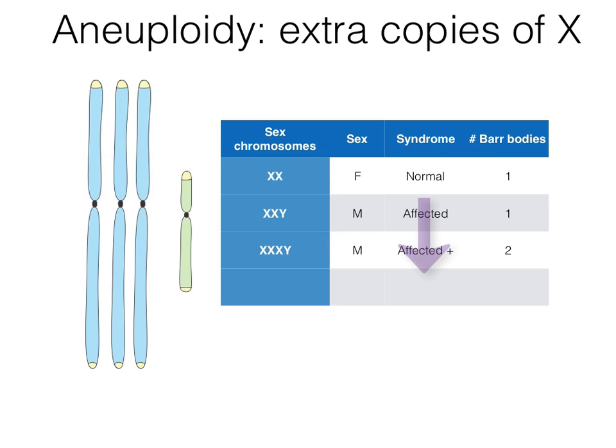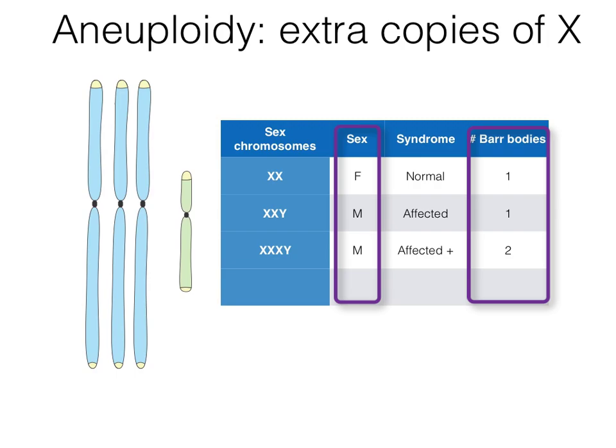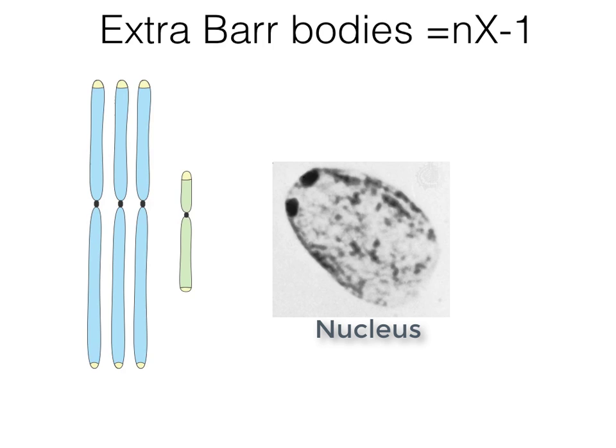Interestingly, the number of Barr bodies is always equal to the number of X's minus one. For example, the nucleus shown here is from an XXXY individual and displays two Barr bodies, corresponding to two X out of three that were inactivated. Indeed, quadruple-X Klinefelters display three Barr bodies.